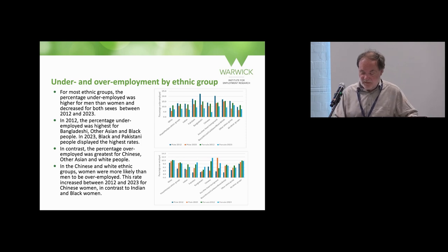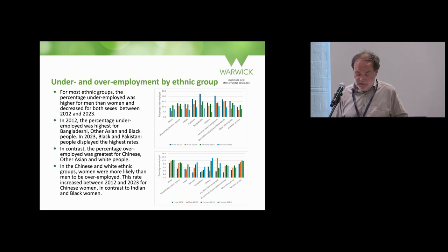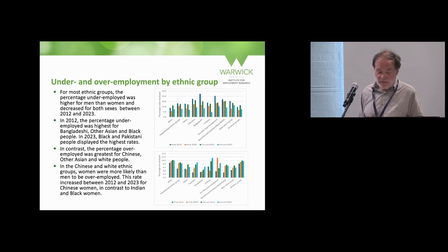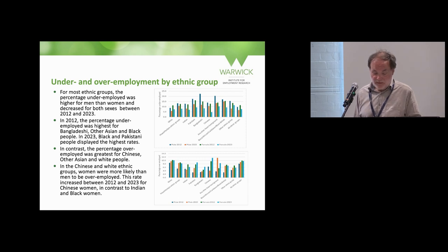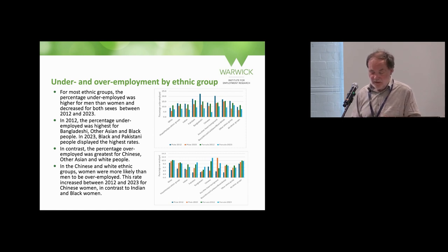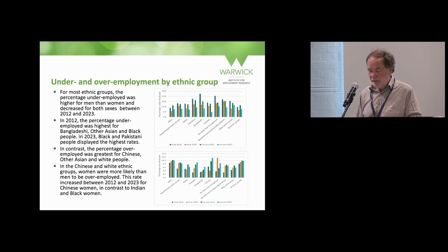By ethnicity, this uses the ethnic UK variable to compare underemployment and overemployment by ethnic groups, comparing males and females in 2012 and 2023. The percentage underemployed was higher for men than women in most ethnic groups, and was highest for Bangladeshi, other Asian and black people. In 2023, black and Pakistani people displayed the highest rates. This demonstrates how the underemployment rate can supplement measures like economic activity rate and unemployment rate to indicate labour market exclusion by ethnic group.